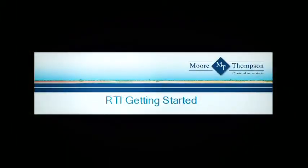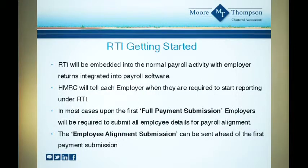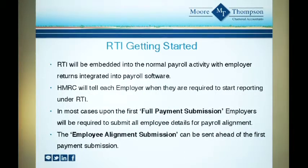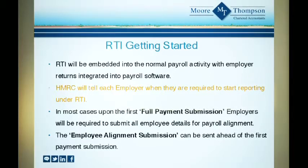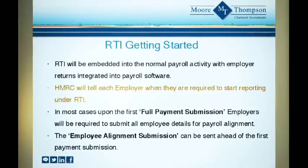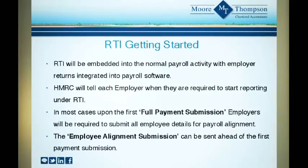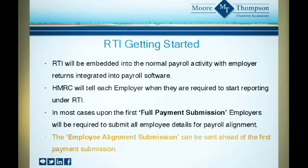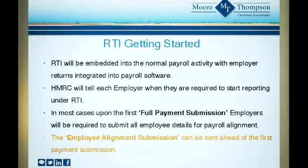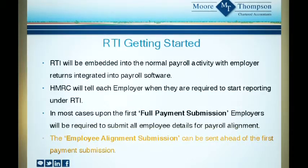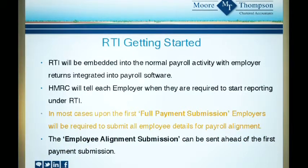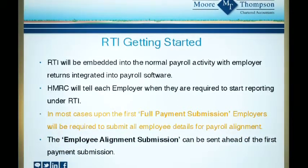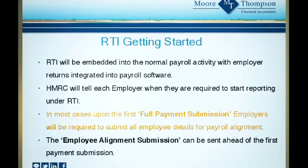Getting started. HMRC wrote to a further 1.4 million employers last October as part of their RTI awareness campaign. The revenue plan to send follow-up letters in February 2013 confirming when employers are expected to start making RTI submissions. The first step is data validation and payroll alignment. This process is known as Employer Alignment Submission or EAS. This checks the data on HMRC's records against that on your payroll software. Once you have received confirmation that the EAS has been received and successfully processed, then the first full payment submission or FPS can be submitted.